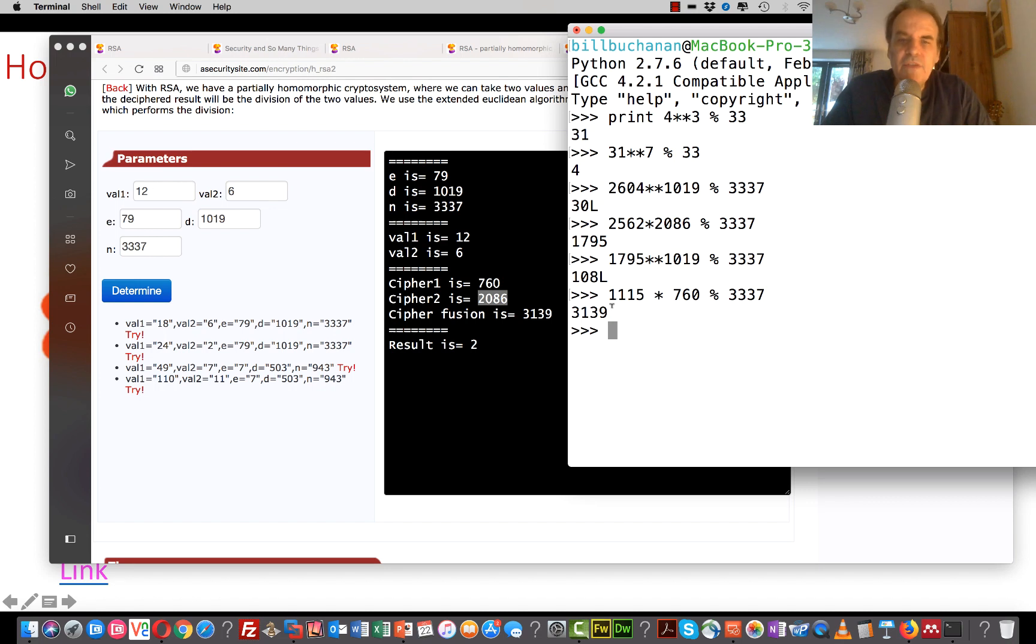Okay, so that gives us 3139. And then we'll decrypt it with our decryption key, which is 1019.